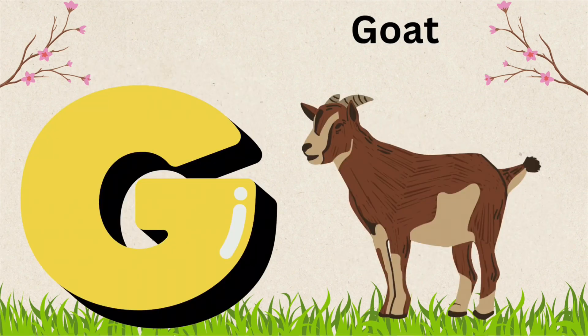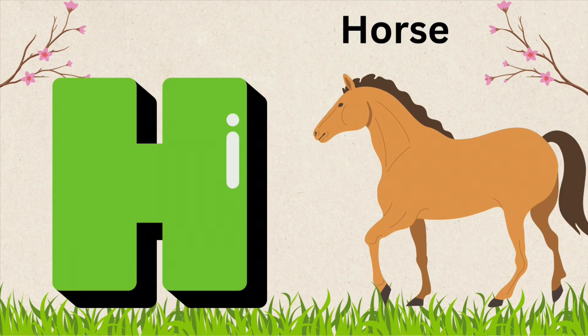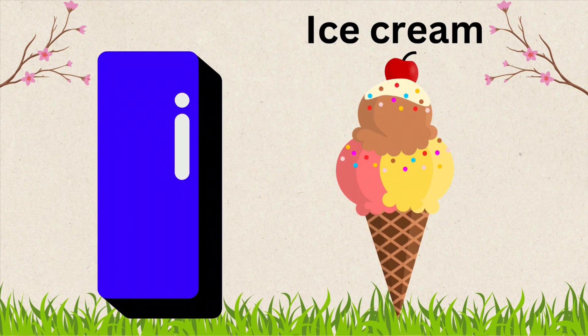G is for Goat. G, O, A, T, Goat. H is for Horse. H, O, R, S, E, Horse. I is for Ice Cream. I, C, E, C, R, E, A, M, Ice Cream.